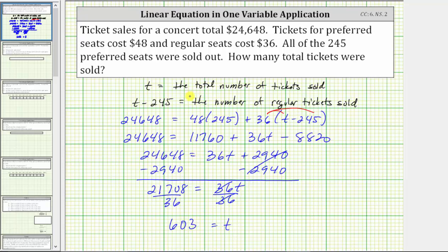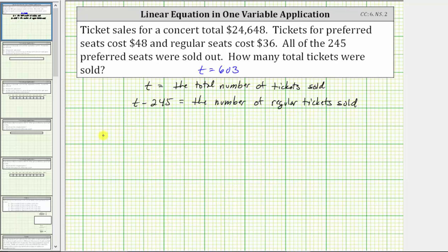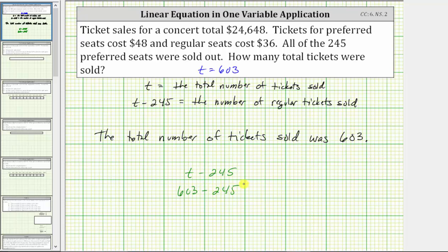And now we know the total number of tickets sold was 603. Now this question doesn't ask, but if it did ask for the number of regular tickets sold, we would need to evaluate t minus 245 when t is equal to 603. And let's go ahead and show that. Performing the substitution gives us 603 minus 245, which is equal to 358. So again, it doesn't ask, but we now know that 358 regular tickets were sold.